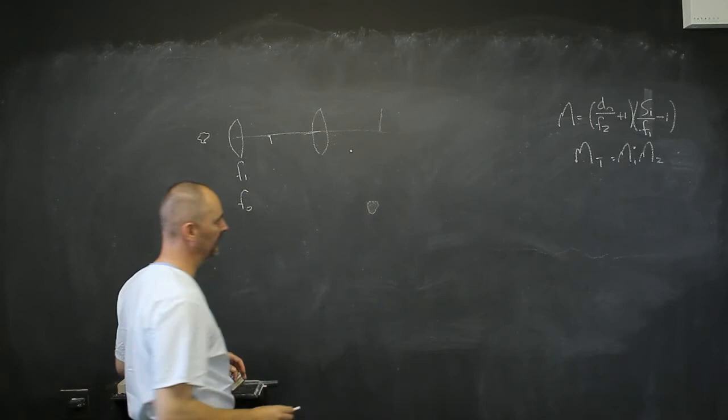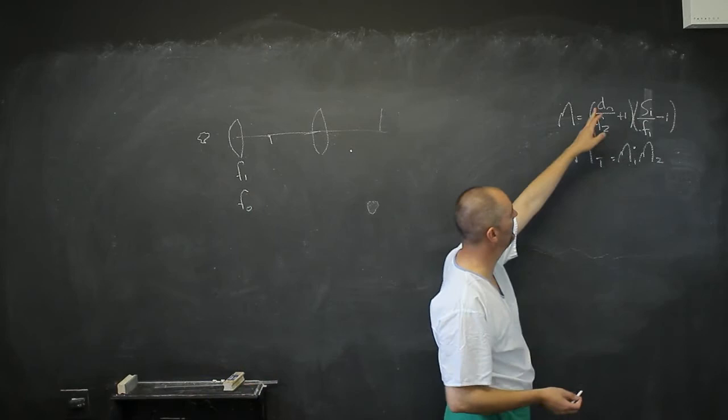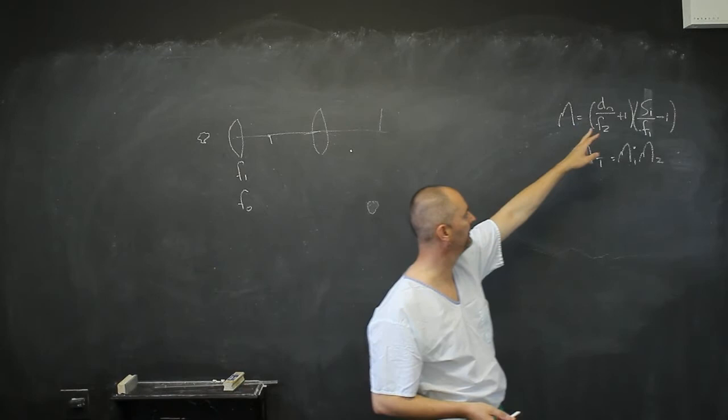So, how do we get, what does this equation mean? Dn is just the near point, which we're going to take as positive 25 centimeters, divided by F2, which is the focal distance of this lens.